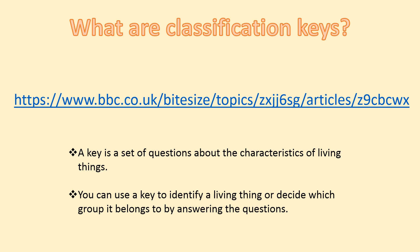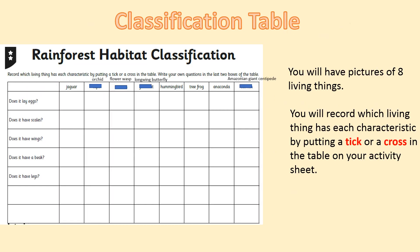You can use a key to identify a living thing or decide which group it belongs to by answering the questions. Our first step was the classification table. I have an example here and we're going to go through this together so that when you reach your main activity, you can do this independently.